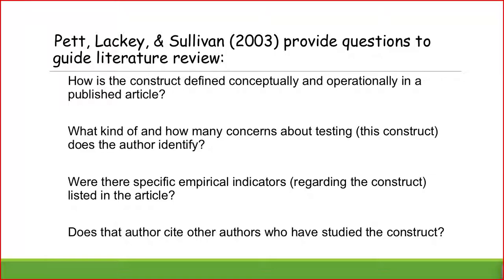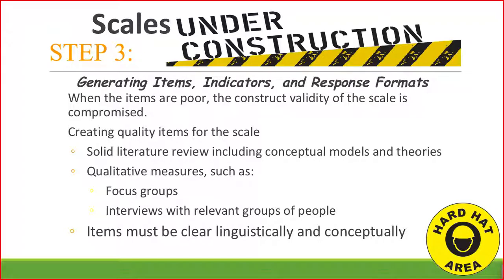Step number three: generate your items, indicators, and response formats. When items are poor, the construct validity of the scale is compromised, so make sure your items are strong. Creating quality items involves that solid literature review, including conceptual models and theories. You also want to include qualitative measures such as focus groups, possibly interviews with relevant groups of people, those experts and multicultural insiders.